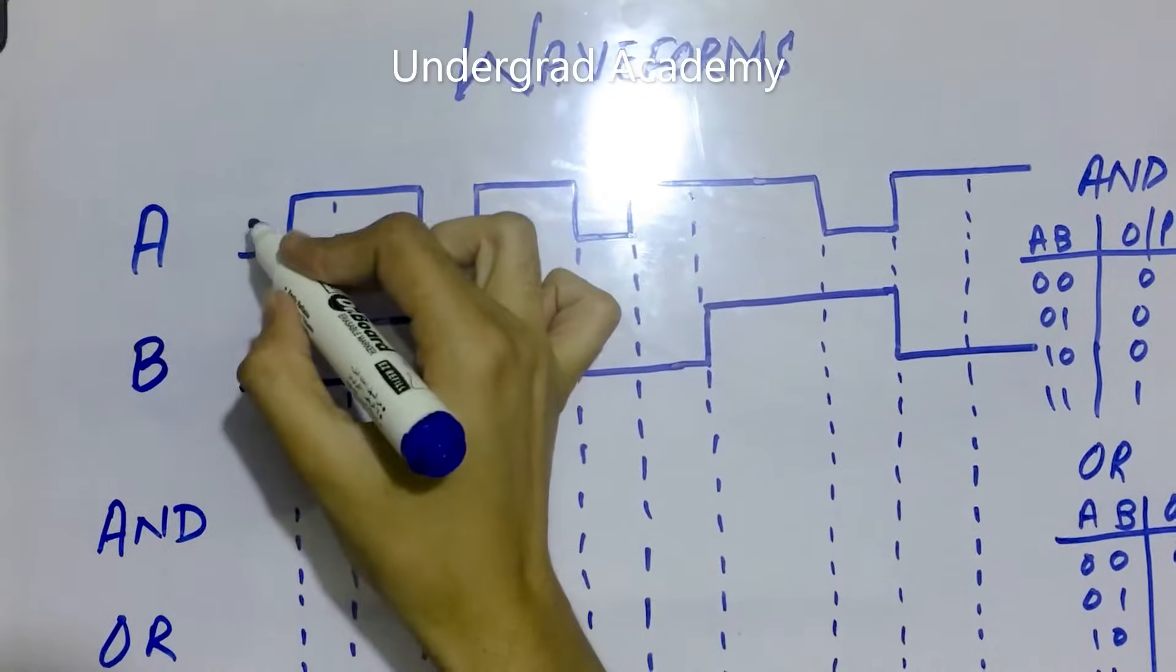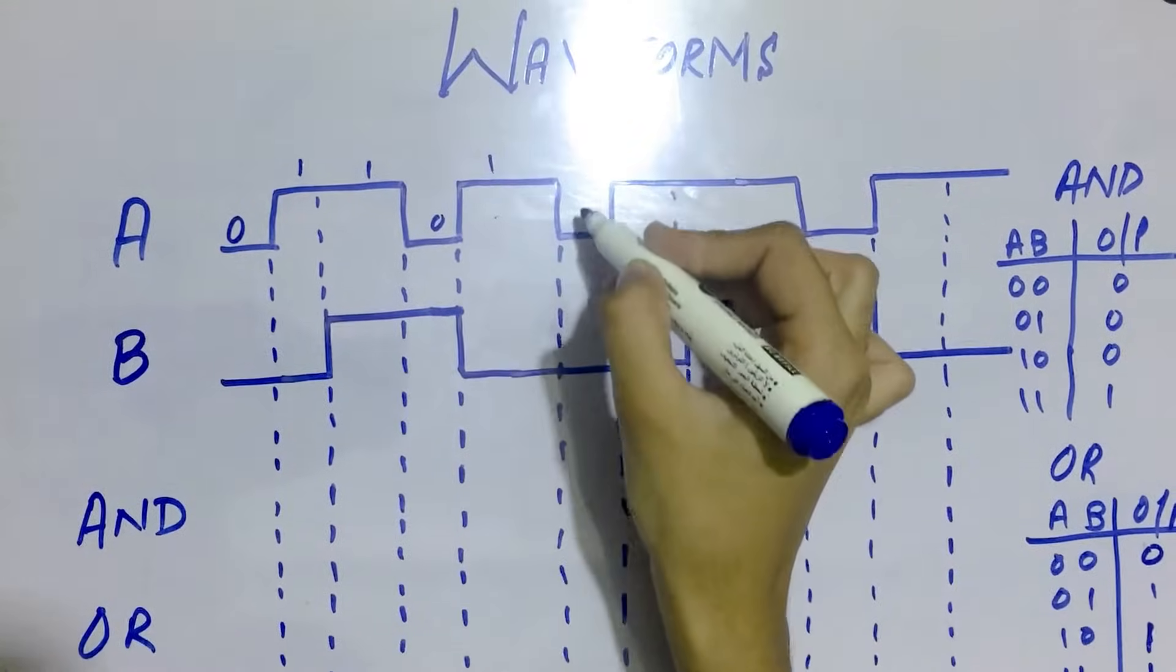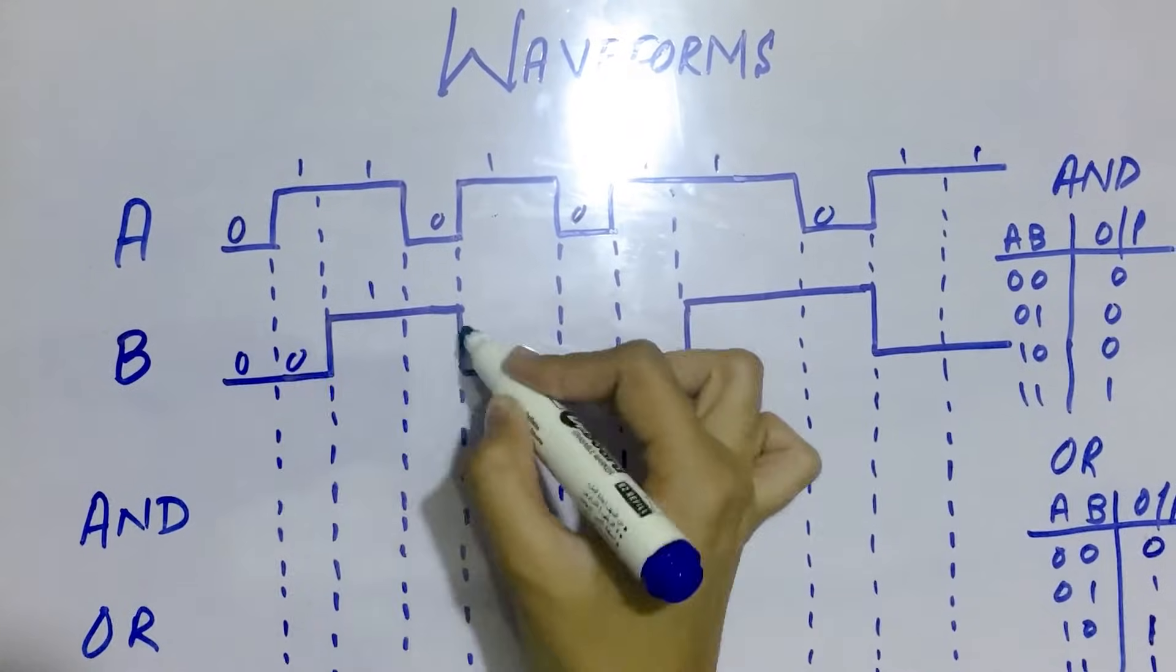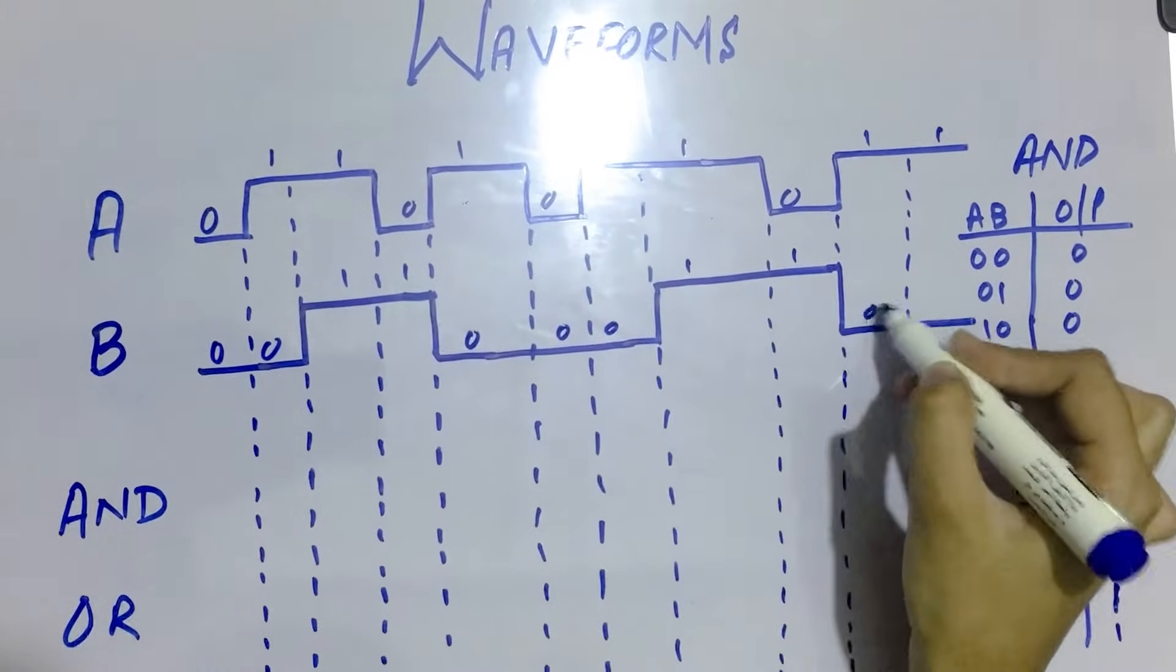We will manually put the inputs: 0, 1, 1, 0, 1, 0, 1, 1, 0, 0, 1, 1, 1, 0, 0, 0, 1, 1, 0, 0.